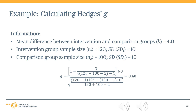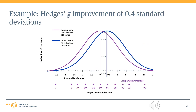The WWC may also translate Hedges G effect sizes into an improvement index. Some WWC products report the improvement index in addition to an effect size — for example, the improvement index is reported in intervention reports, but not in practice guides. The improvement index is a transformation of the Hedges G effect size that represents the expected change in percentile rank for an average comparison group student if that student had received the intervention. It measures the effect of the intervention in percentile points if the comparison group's average performance was at the 50th percentile.